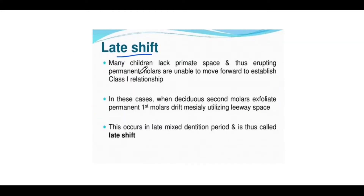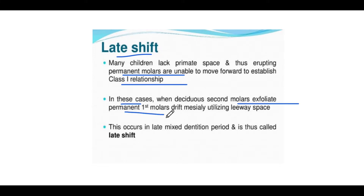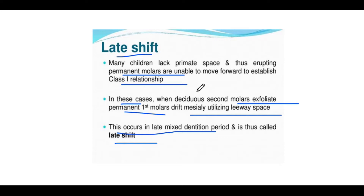What is late shift? Many children lack primate spaces and thus erupting permanent molars are unable to move forward to establish a Class 1 relationship. In these cases, when deciduous second molars exfoliate, permanent first molars drift mesially utilizing leeway spaces. This occurs in the late mixed dentition period, hence it is called late shift. In early shift they utilize primate spaces; in late shift they utilize leeway spaces.